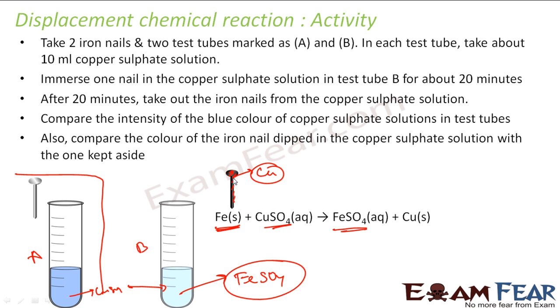And this has, this should not be black, there is some issue with the animation, this guy should be little copperish color and this guy becomes a lighter color because FeSO4 is lighter and CuSO4 is dark. So that's how it happened. This CuSO4 became FeSO4 and this iron got a layer of copper.